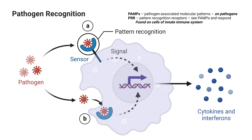Because when there's one microbe, there's usually more — this alarm that gets set off will help recruit other innate immune cells, other white blood cells, to the site of infection and start to resolve that infection or at least decrease it significantly. And that's a brief overview of the innate immune system.